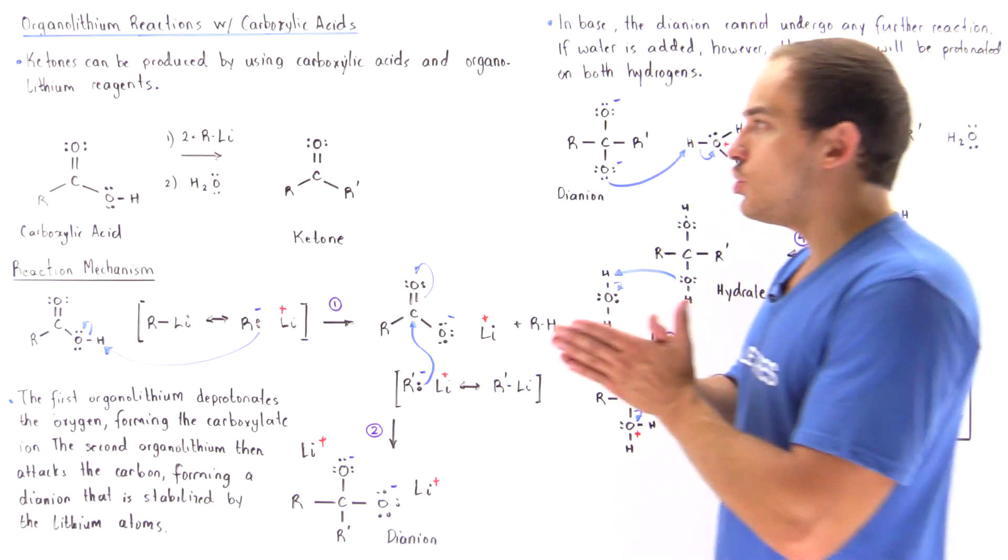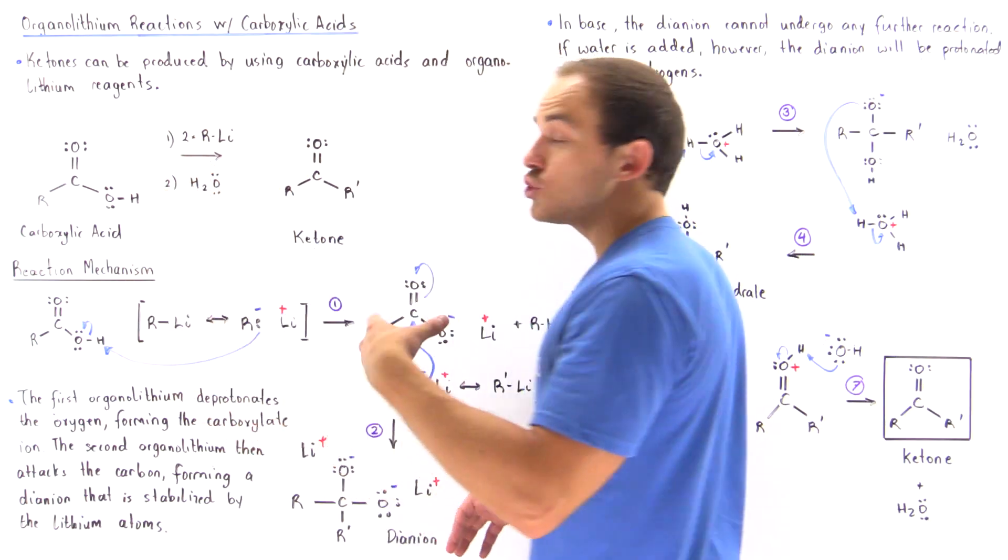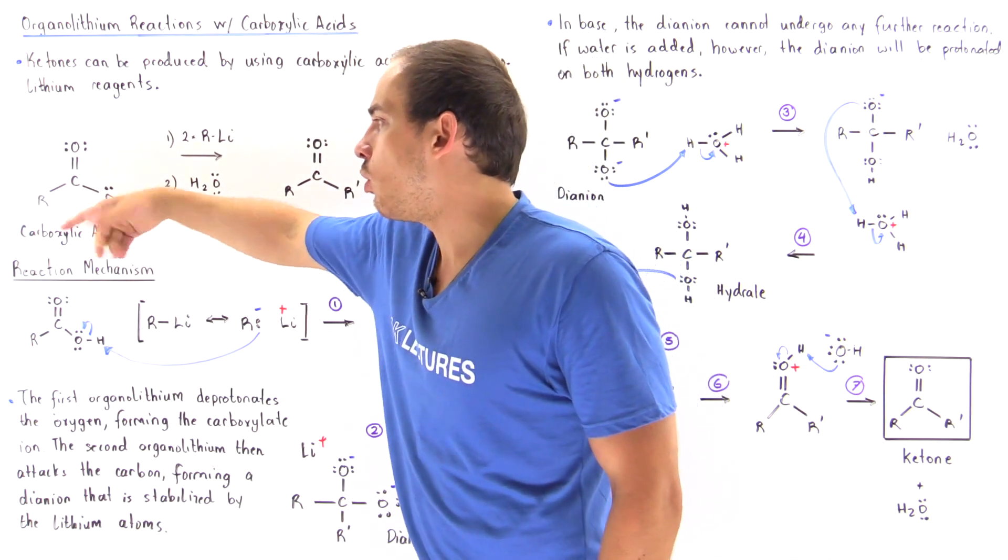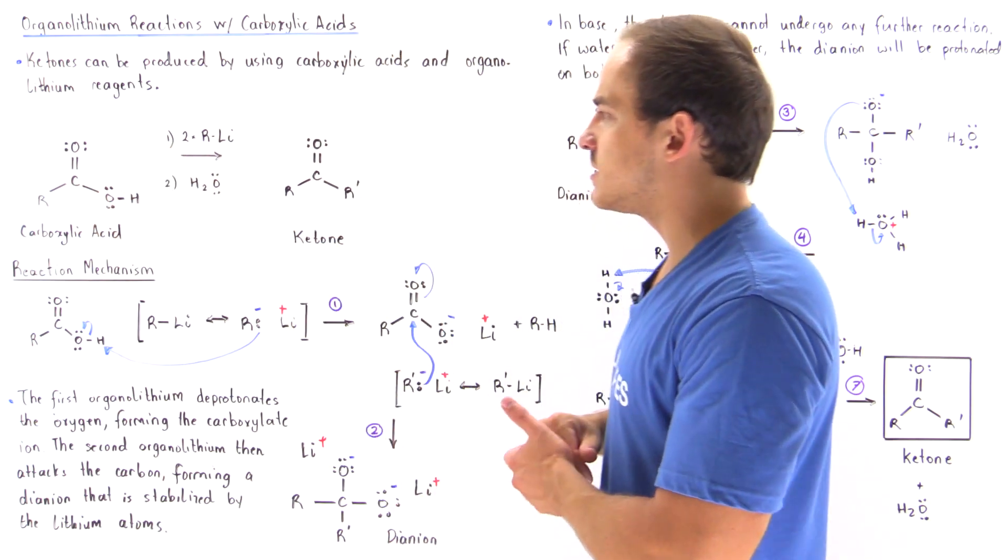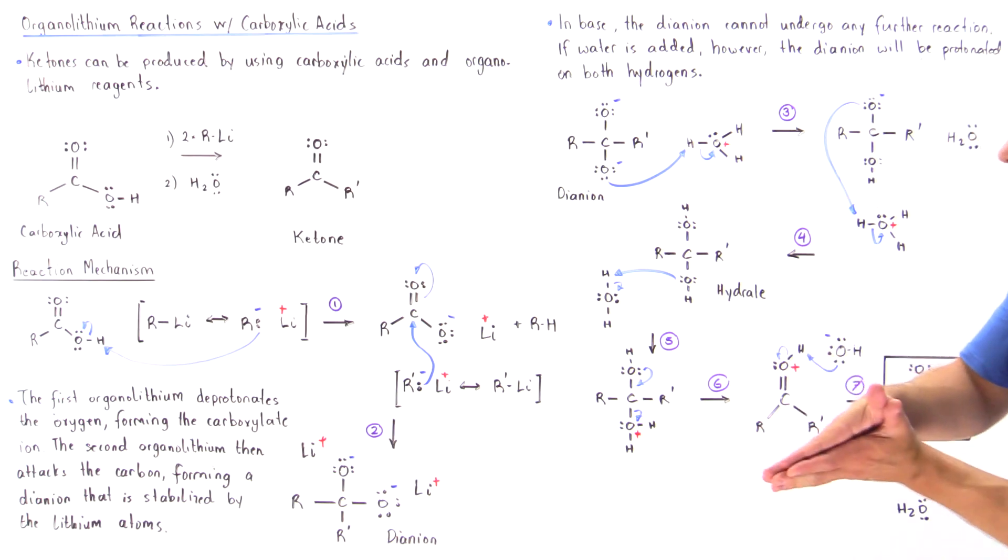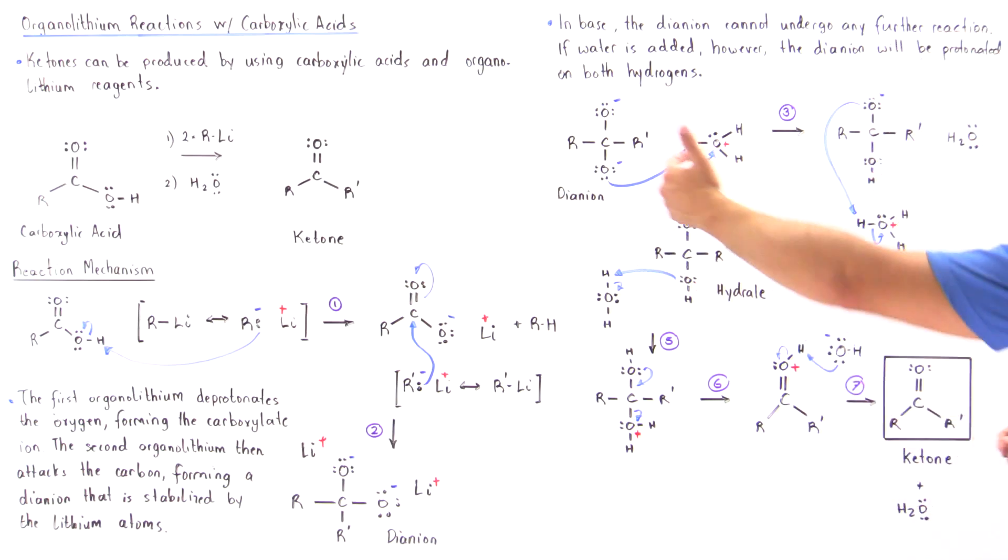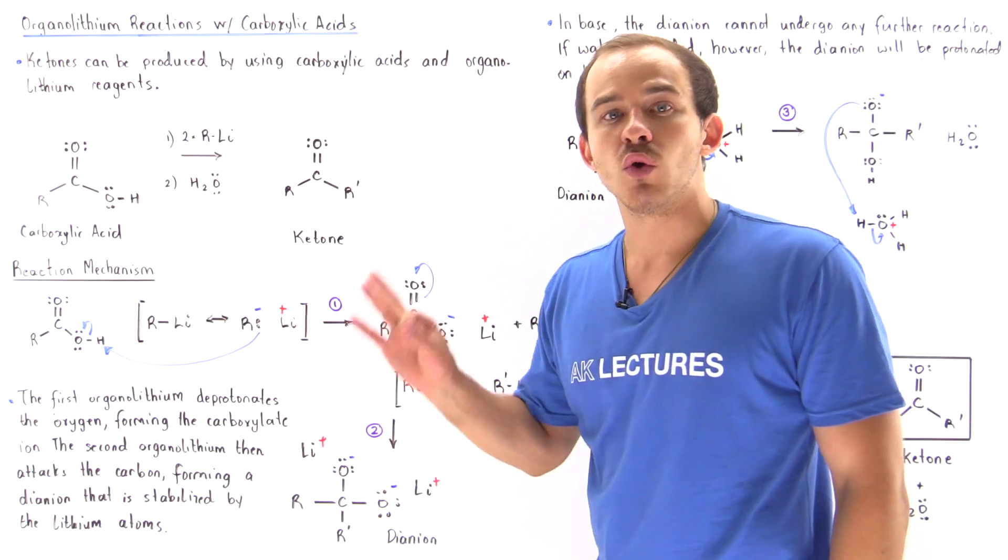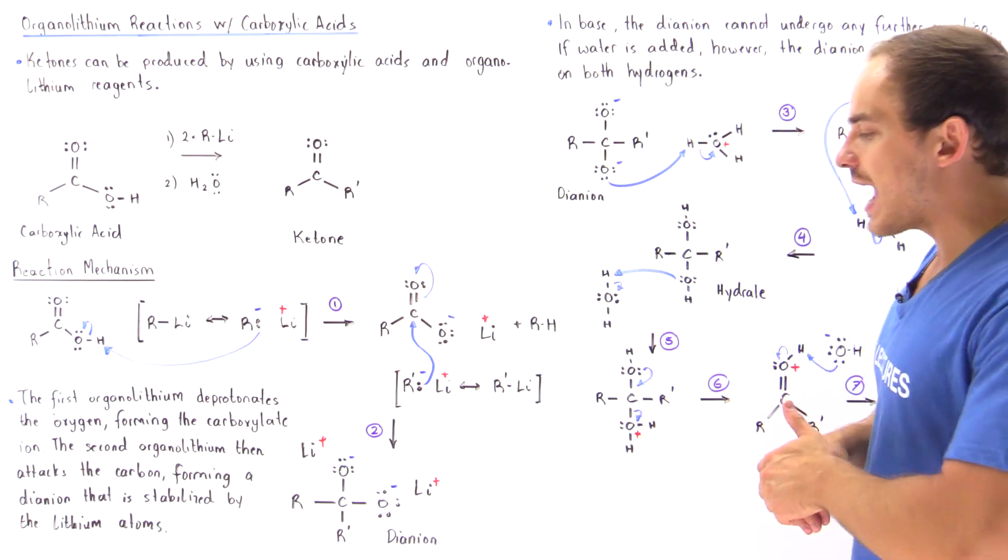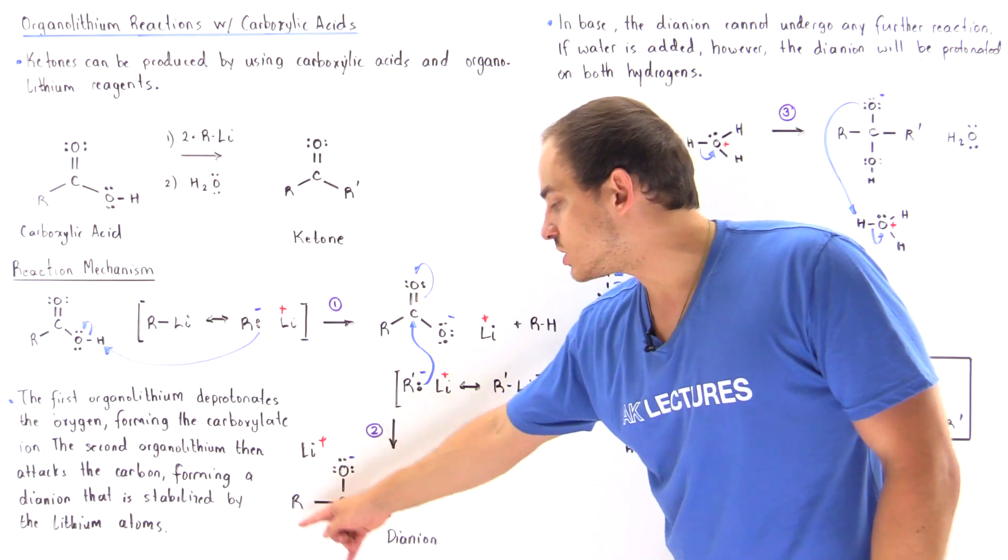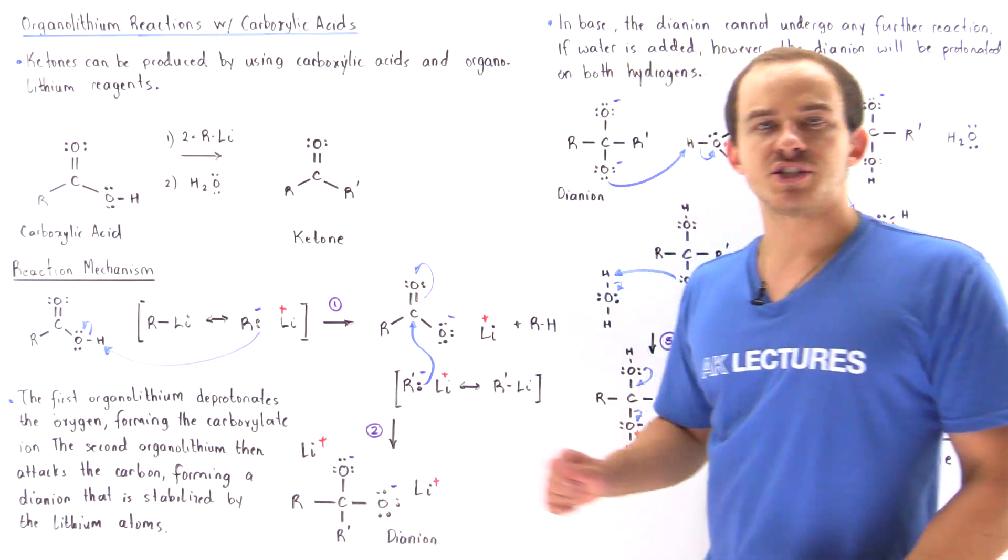We must use two molecules (or two moles) of organolithium reagent per one molecule of carboxylic acid. In the second series of steps, we must add water for the di-anion to undergo reaction, because the di-anion will not react in the presence of a base due to the absence of a good leaving group on this molecule.